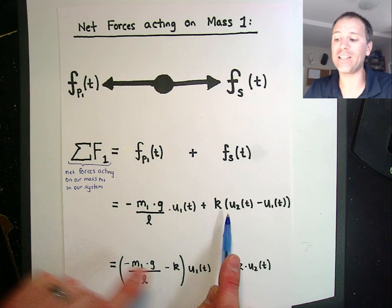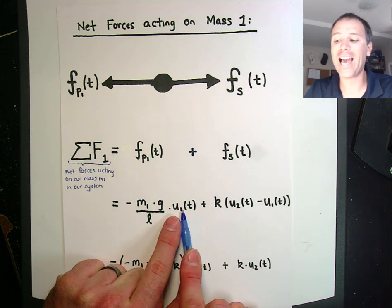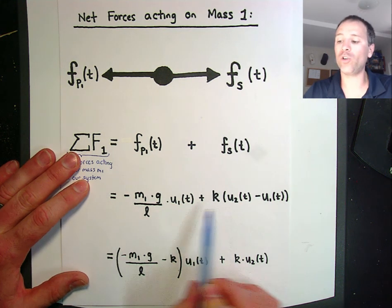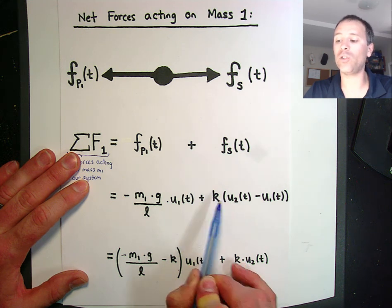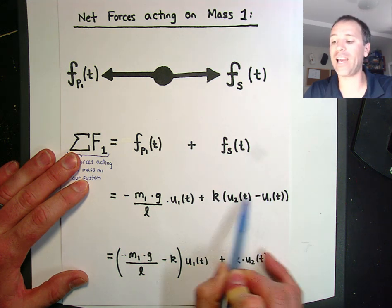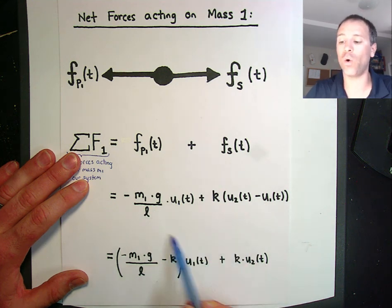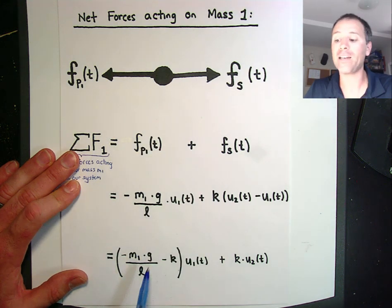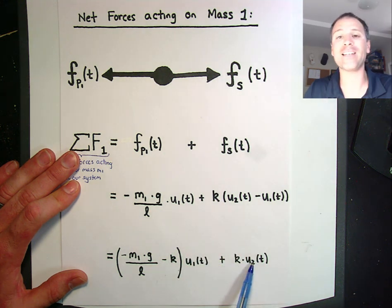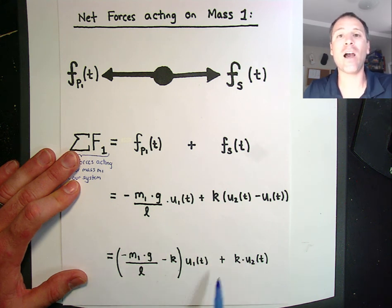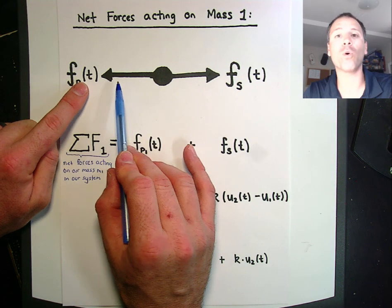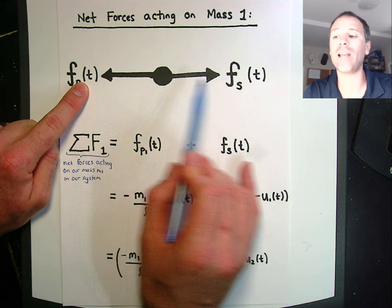The reason we call this 'coupled' is that the motion of u1 and u2 is now dependent on each other — that's the whole reason the spring couples this motion together. If we distribute k, this becomes k times u2 minus k times u1. We can bring the k times u1 term over and factor, giving us the net force acting on mass 1 as negative m1 times g divided by l, minus k, times u1, plus k times u2. This represents the net force acting on mass 1 under the assumption that the pendulum force acts in the same horizontal direction as the spring force.